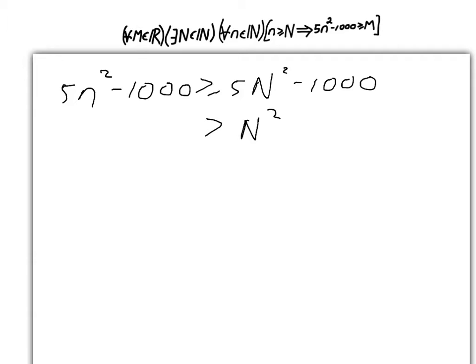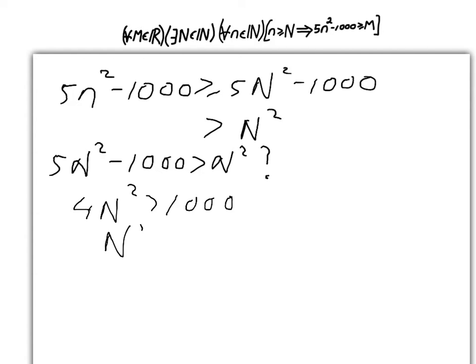Okay, so what does it take to make that happen? Is that bigger than n squared? That's the question. And so if you just bring this n squared across, and the 1,000 over, it just says that 4n squared is bigger than 1,000, which says that n squared is bigger than 250, which says that n is bigger than the square root of 250. So that's something that we want to arrange to happen. So this we want.